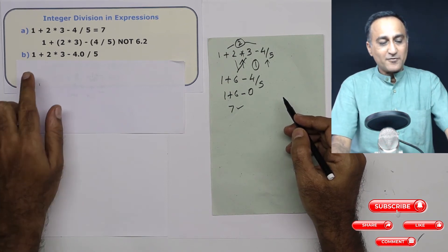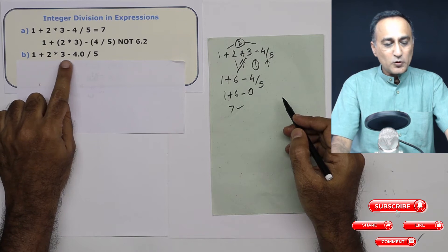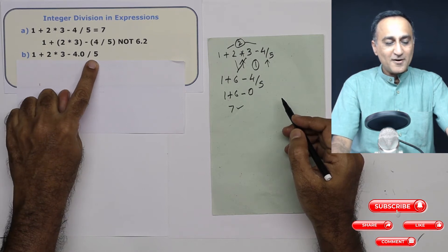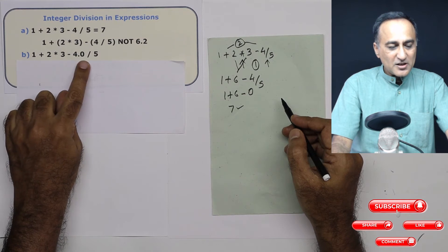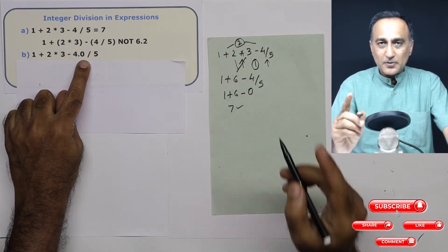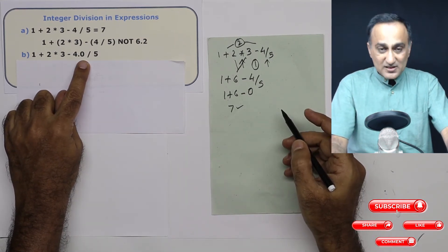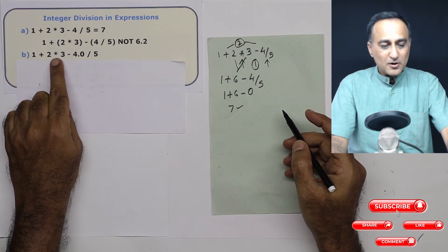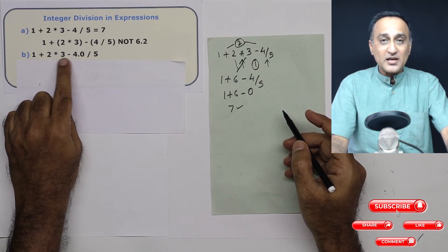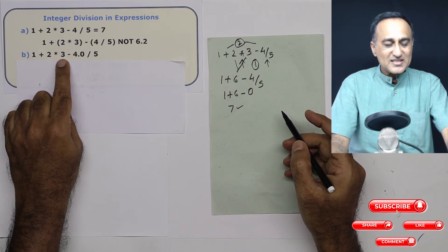Now I have done something different. I have done 1 plus 2 into 3 minus 4.0 upon 5. As usual, multiplication and division have the topmost priority. So what is going to happen is it's going to multiply first because from left to right multiplication came before division. So 3 into 2 is 6.